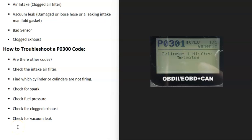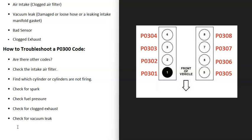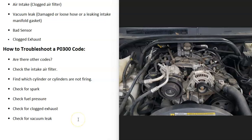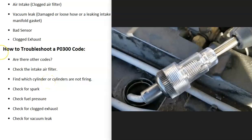You can also try to locate which cylinders are misfiring. Other codes will point to specific cylinders — for example, P0301 is cylinder one, P0302 is cylinder two, P0303 is cylinder three, and so on. Once you know which cylinders are misfiring, you can test them for spark. One method is to use an inline spark tester tool — one side goes on the spark plug, the other goes to the coil, and then you start the engine and check for spark.